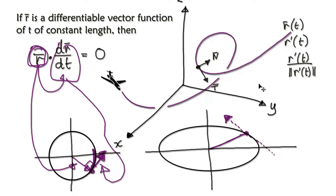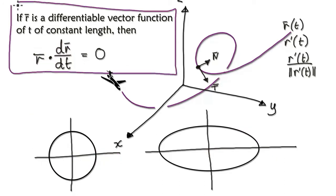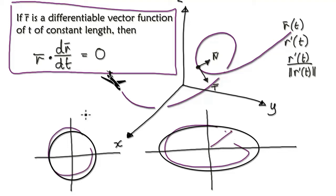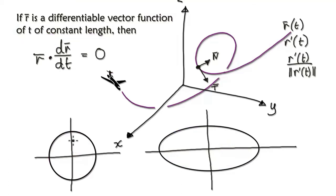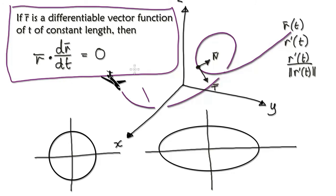Hopefully you have a rough understanding of why, when something is not at a constant length, it's not going to be orthogonal, whereas if you have constant length and take the derivative it will always be at 90 degrees. If it's at 90 degrees, then the dot product will always be zero. We will prove this more rigorously in a future video.